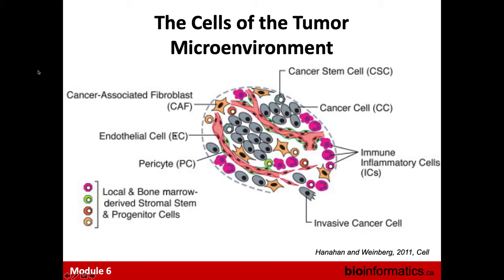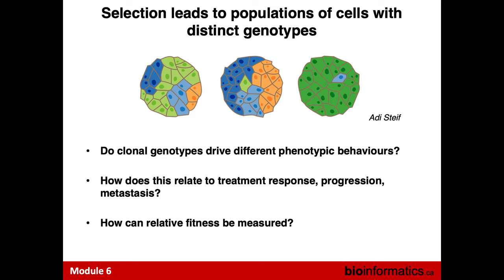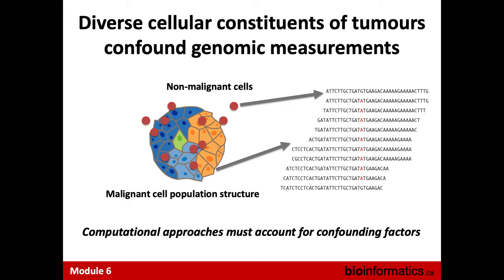The presence and composition of microenvironmental cells can significantly change tumor biology — for instance, making it less or more sensitive to chemotherapy. We're increasingly appreciating that it's the combination of genetically distinct clonal lineages of malignant cells and the composition of the tumor microenvironment that underlies pathogenesis. Understanding tumor biology requires two things: first, detecting these clonal genotypes and linking changes in their population frequencies to disease progression and treatment response; and second, accounting for the presence of non-malignant cells, which is a significant confounding factor in analyzing tumor genomes.